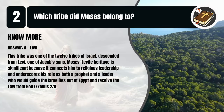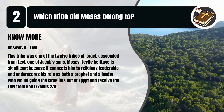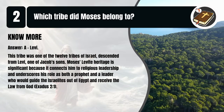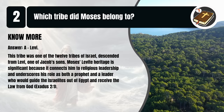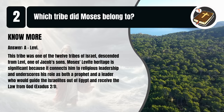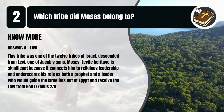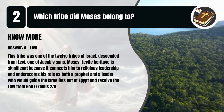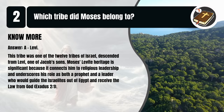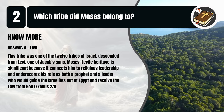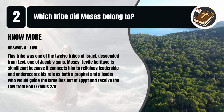That's A. Levi. This tribe was one of the 12 tribes of Israel descended from Levi, one of Jacob's sons. Moses' Levite heritage is significant because it connects him to religious leadership and underscores his role as both a prophet and a leader who would guide the Israelites out of Egypt and receive the law from God. Exodus 2:1.